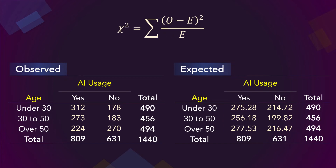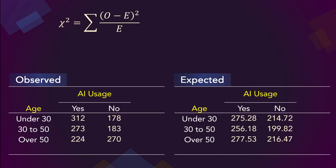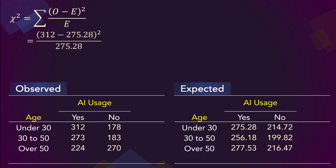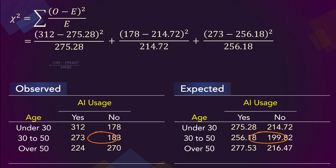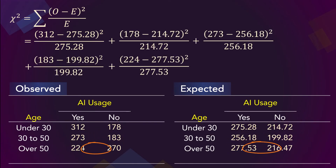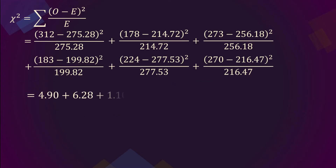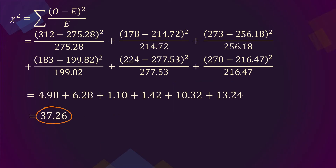Let's now compute the value of the chi-square statistic for the problem. For the first cell, we take the observed 312 minus the expected 275.28, square the result, and divide by the expected. We do the same for 178, 273, 183, 224, and 270. On computing these, we have an observed chi-square value of 37.26.